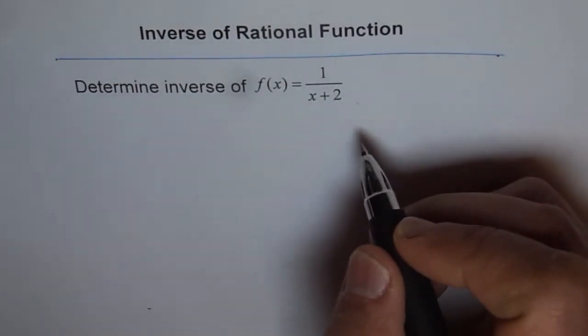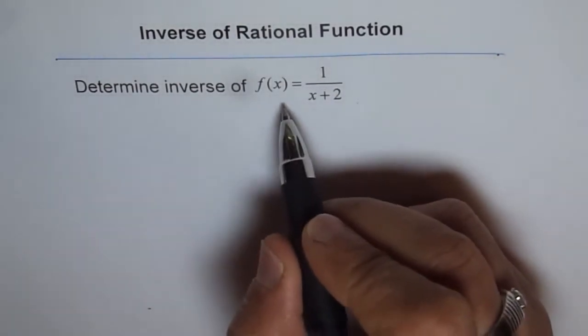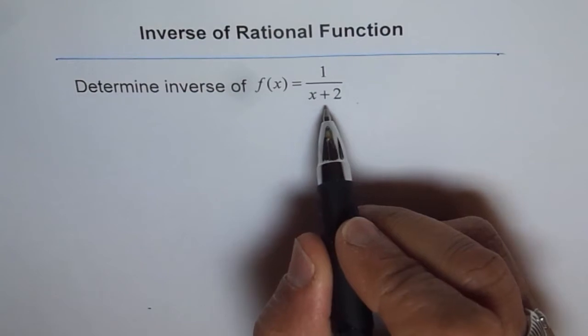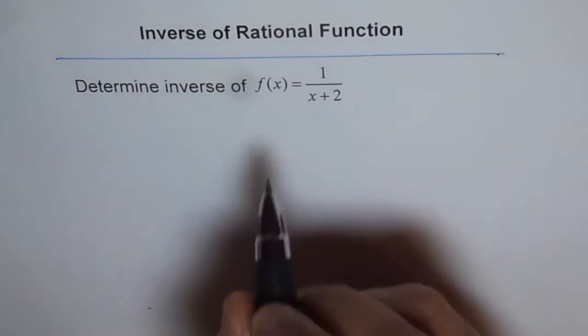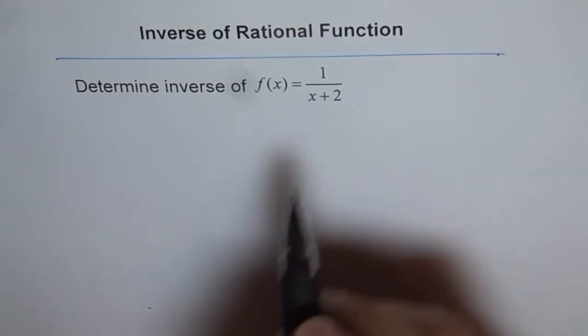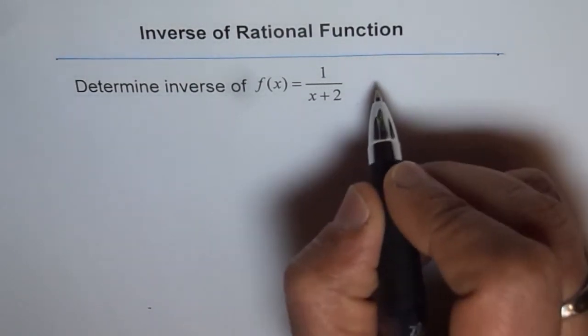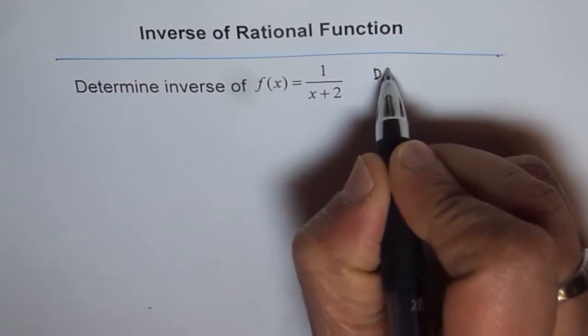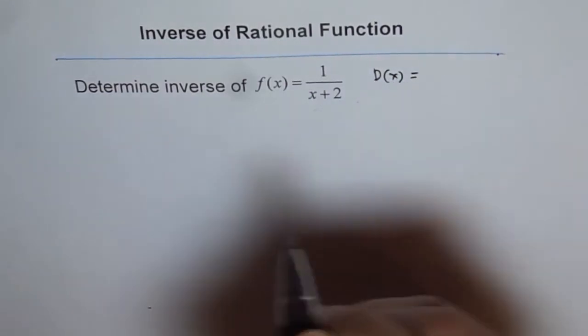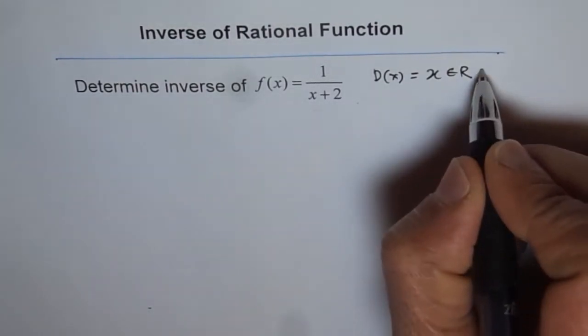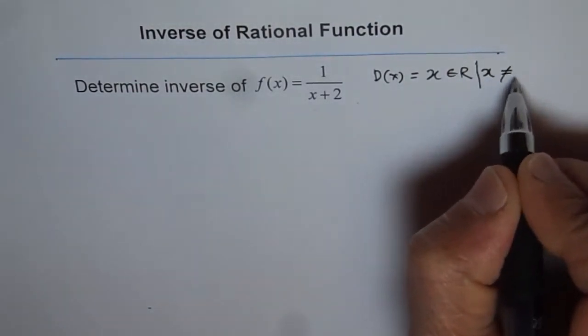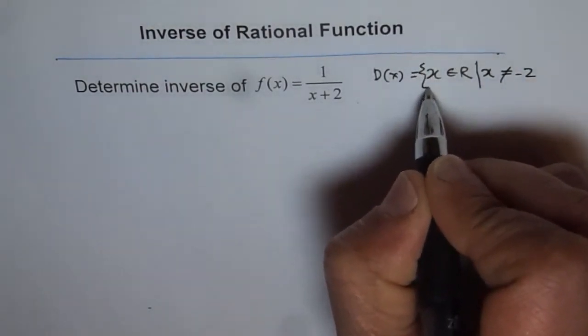Now here, the given function is f(x) equals 1 over x plus 2, and we need to find its inverse. First, find the domain and range of this function. The domain, D(x), is equal to x belongs to real numbers but x is not equal to minus 2. So that is the domain.